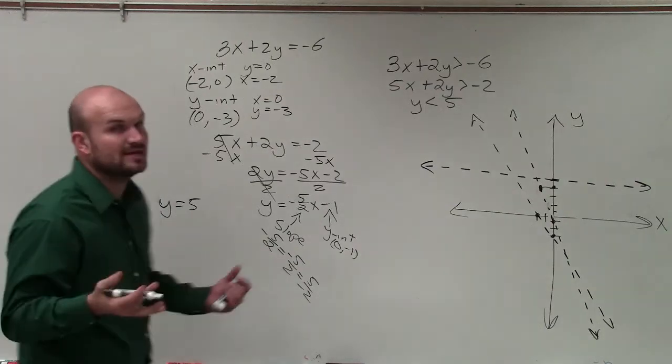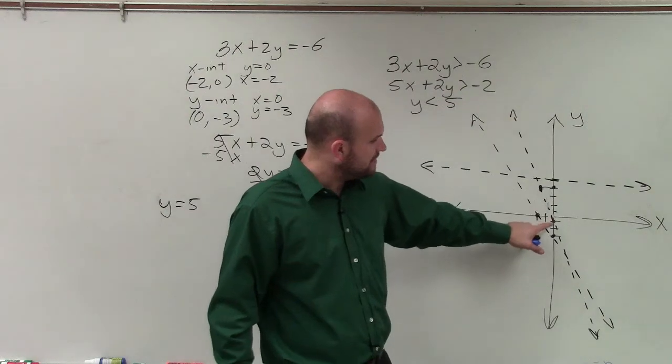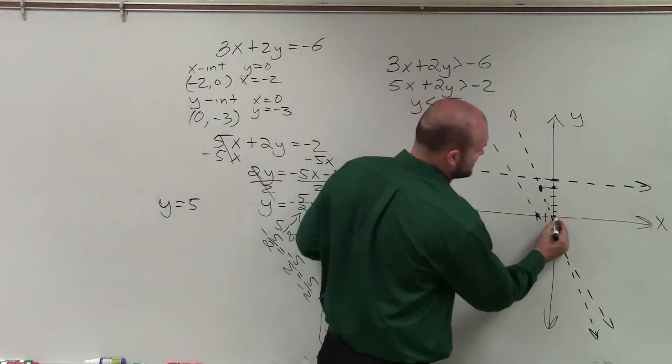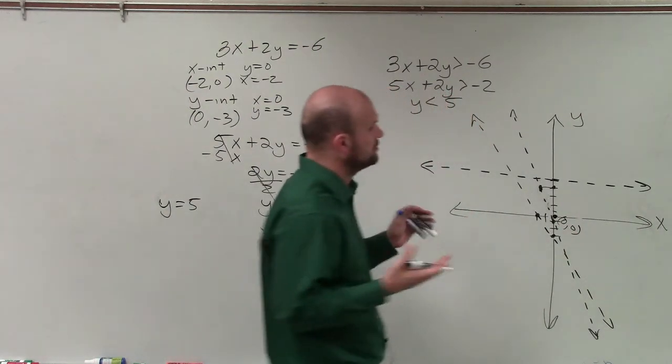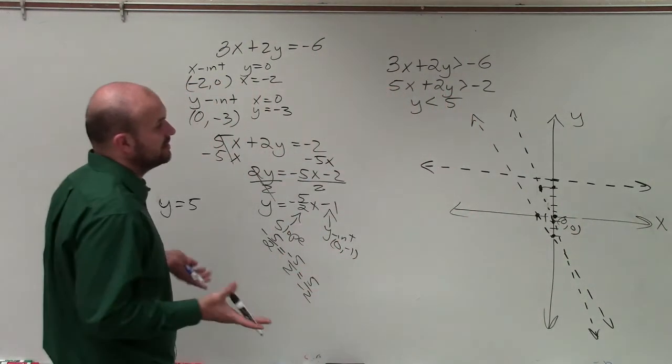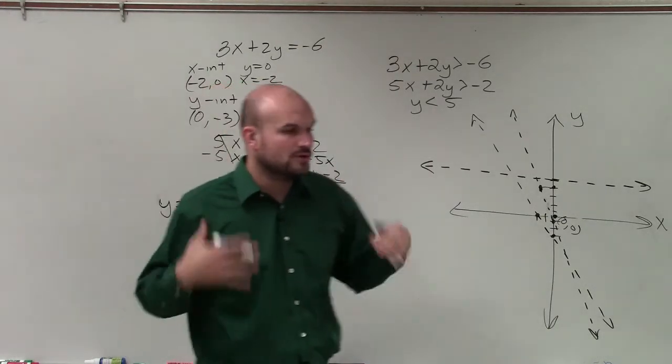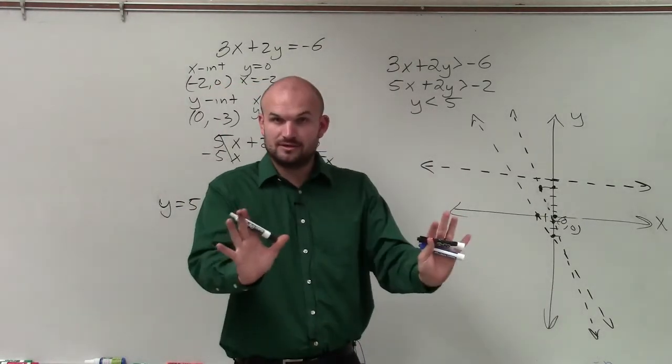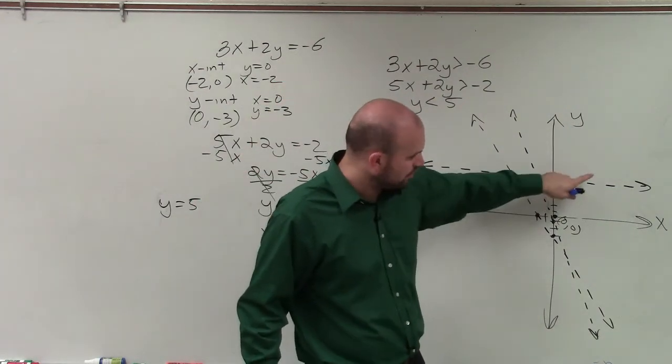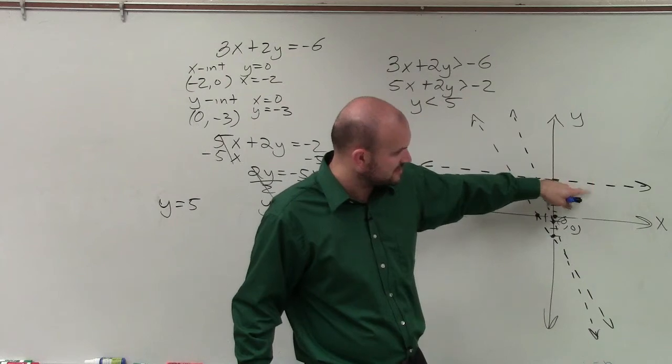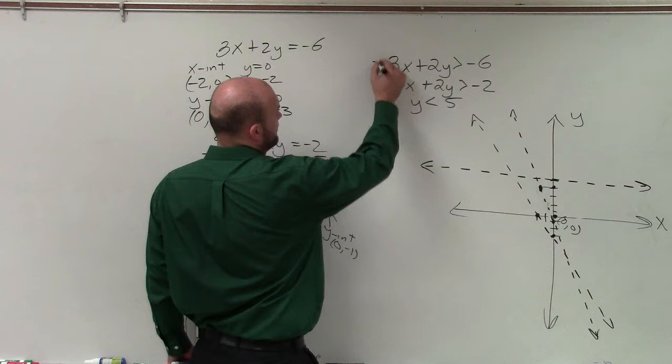Now I need to determine where is the feasible region. And to do that, I'm going to want to choose a test point. Now I notice that none of my points go through my test point 0, 0, which I always like to use as long as none of my boundary lines go through 0, 0. And all I'm simply going to do is plug in 0, 0 for each of my inequalities and determine if it's true or false. If it's true, that's where I'm going to be shading towards from my boundary line. If it's true, I shade towards the test point. And if it's false, I'm going to shade away from it.